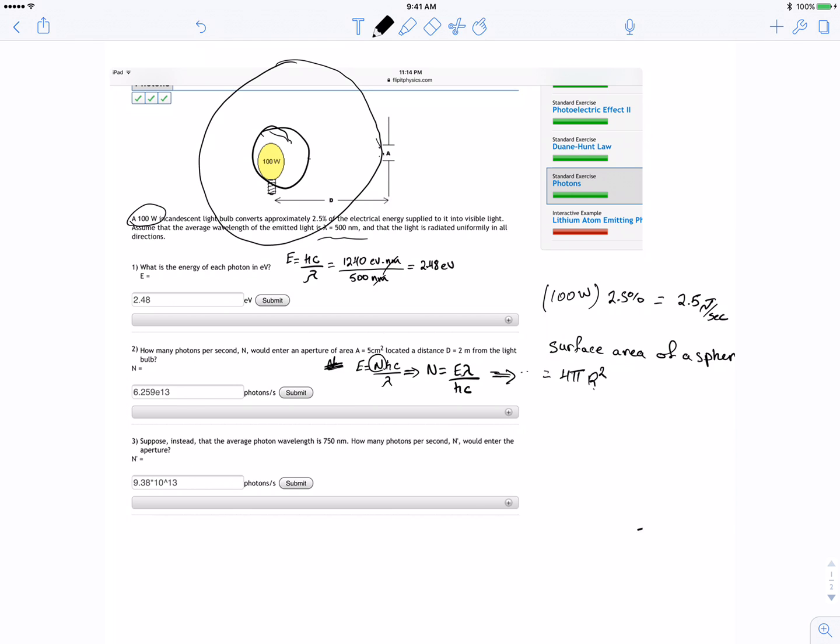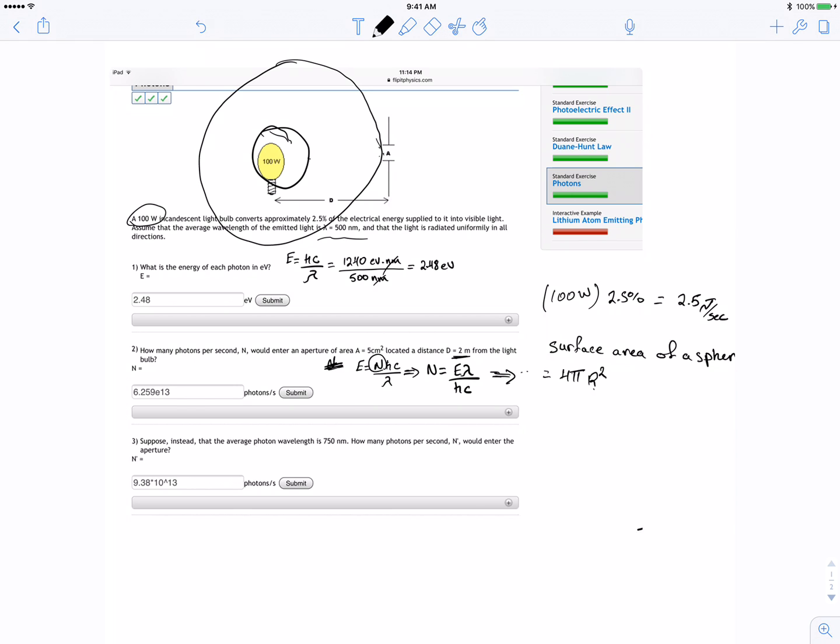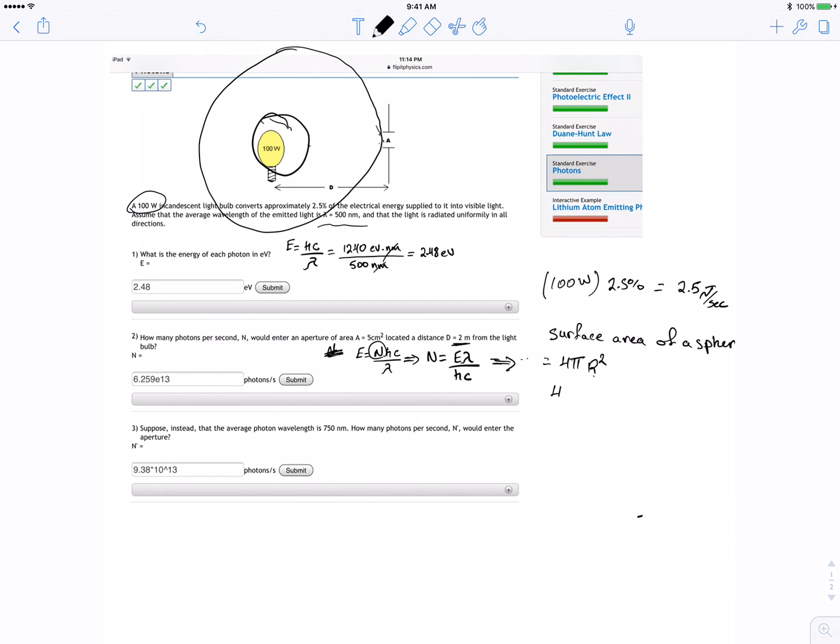So surface area of the sphere is equal to 4 pi r squared. Our r is going to be this distance D. So 4 pi times 2 squared. For me I got 50.28 meters squared.